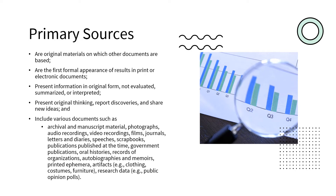Primary sources are original materials on which other documents are based. They are the first formal appearance of results in print or electronic documents, presenting information in original form — not evaluated, summarized, or interpreted. They present original thinking, report discoveries, and share new ideas. Many kinds of documents count as primary sources: archival and manuscript materials, photographs, audio and video recordings, films, journals, letters and diaries, speeches, scrapbooks, publications capturing events in the moment like newspaper articles, government publications, oral histories, records of organizations, autobiographies and memoirs, printed ephemera, artifacts, and research data like public opinion polls.